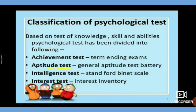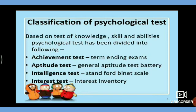Aptitude tests assess a person's potential ability. Intelligence tests assess a person's general ability and how they adapt to their environment; through these we can identify a person's intelligence level, such as the Stanford-Binet test. Interest inventory tests are used in career counseling to assess a person's interests and preferences.